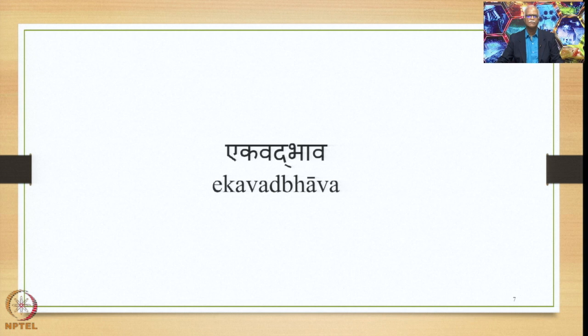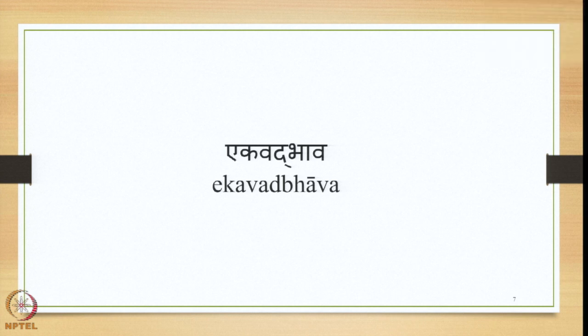Currently we are studying the Ekavad Bhava as far as the Dvandhva Samasa is concerned, which says that there are some words and some meanings which get compounded only in the sense of Samahara and never in the sense of Itaretara Yoga. Just as Samahara is singular in number and neuter in gender, the Samasa of these restricted elements also gets singular number as well as neuter gender. This getting the singular number is referred to as Ekavad Bhava.